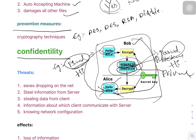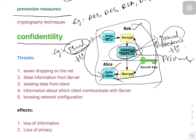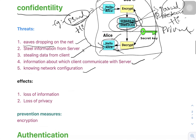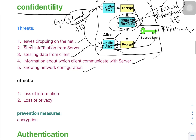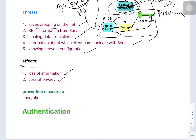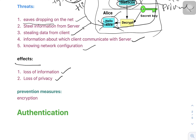The threats in confidentiality are eavesdropping on the network — a type of hacker who steals information from the server — and knowing the network configuration and client-server communication details. The effects are loss of information and loss of privacy. The prevention method to overcome these problems is encryption.